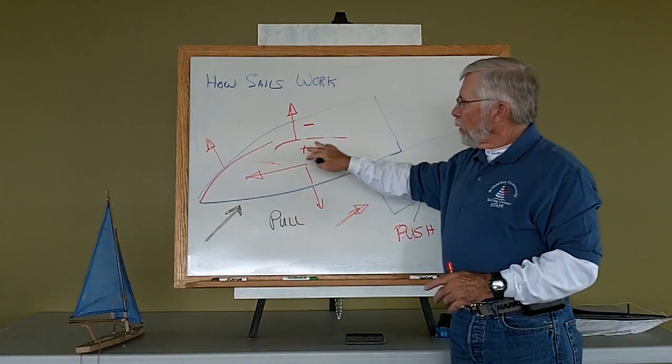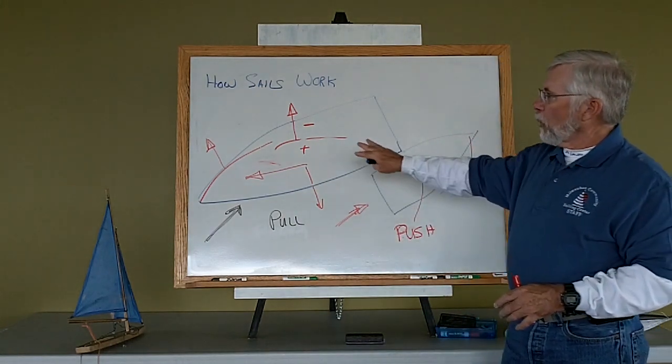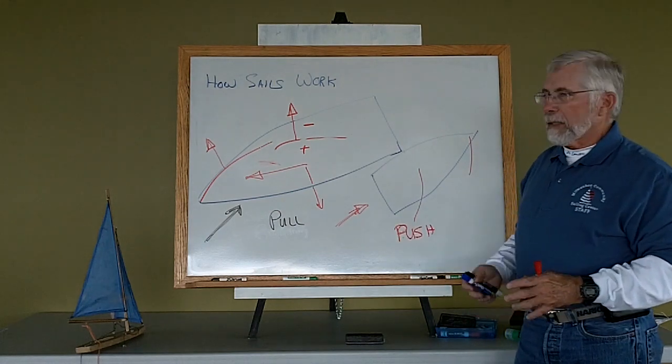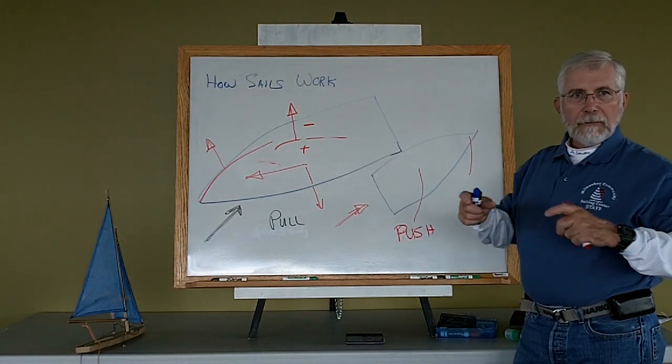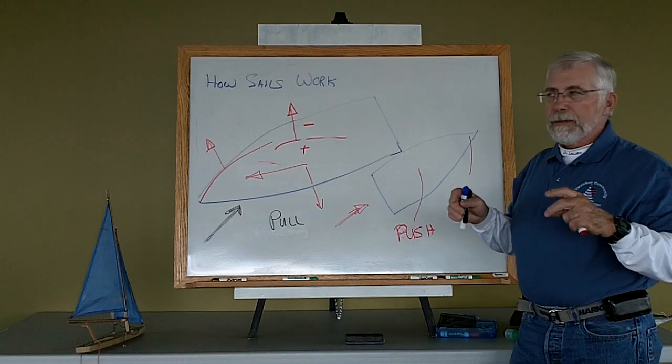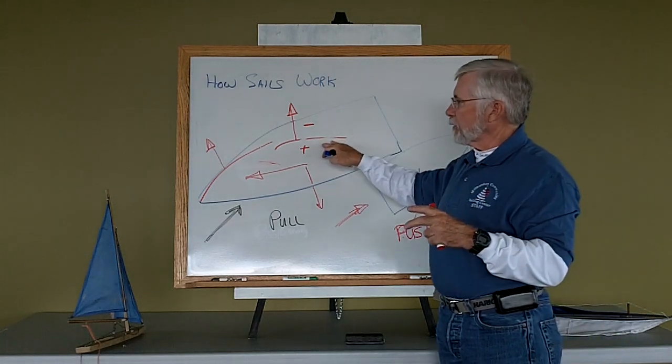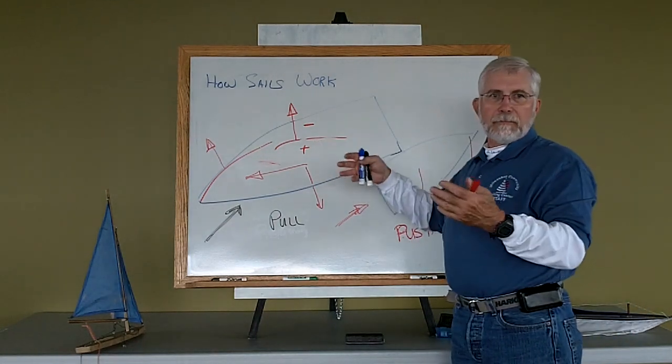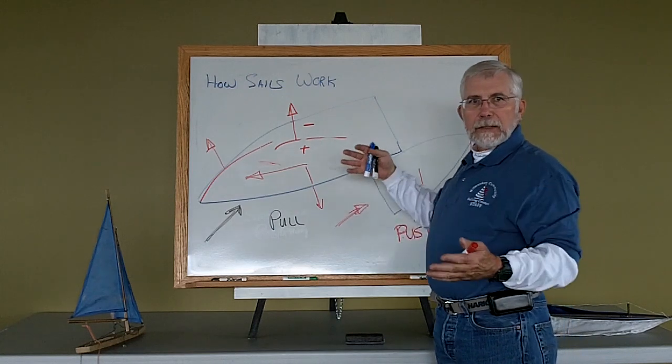One thing to consider in pull mode is that unlike an airplane, I don't have a rigid structure holding the sail shape. It's made of cloth, in most cases Dacron, and can collapse.